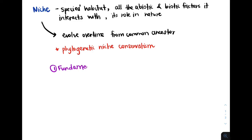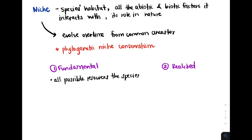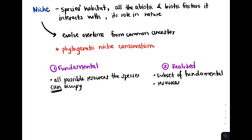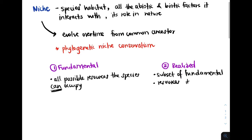There are two key types of niches: the fundamental niche and the realized niche. The fundamental niche is all the possible resources that a species can occupy or utilize — all the habitats it can occupy, all the foods it can eat, or all the climates it can live in. But oftentimes a species cannot actually use its entire potential fundamental niche. It's limited to a realized niche because it is competing with other organisms. So the realized niche is the actual resources that a species utilizes — it is a subset of the fundamental niche.